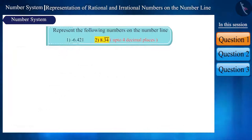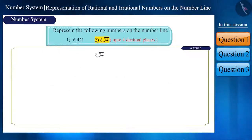The second number is 8.34 bar. And according to the question, we have to represent it up to 4 decimals on the number line. This is a non-terminating recurring decimal.